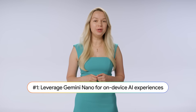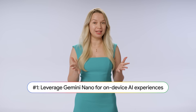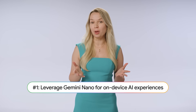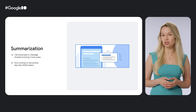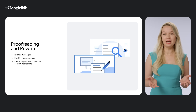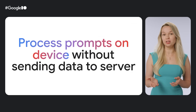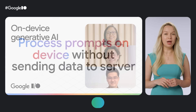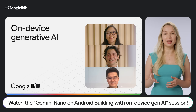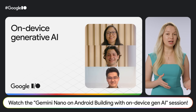Number 1. We are bringing on-device Gen AI to you with Gemini Nano, our most efficient and compact model, now in ML Kit. You can easily add features like summarization or proofreading into your apps with local data processing and offline availability at no additional cost. To learn more, watch this talk: Gemini Nano on Android — building with on-device Gen AI.